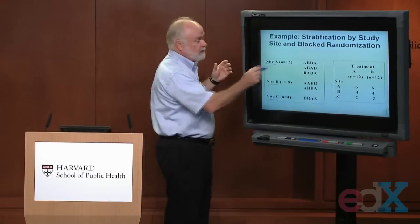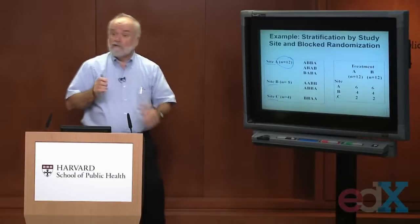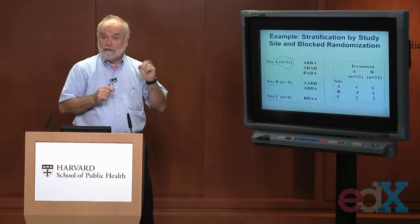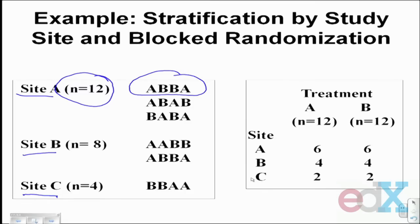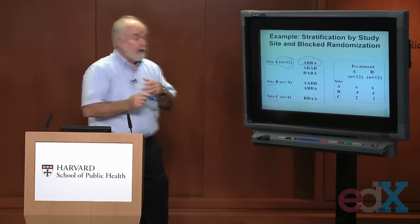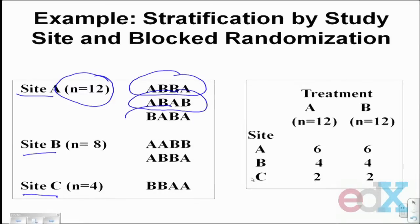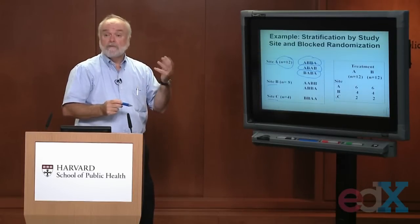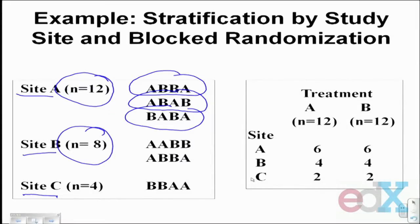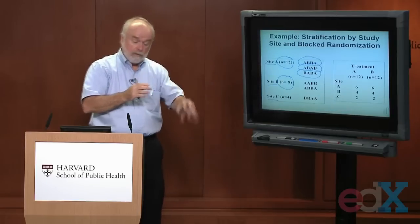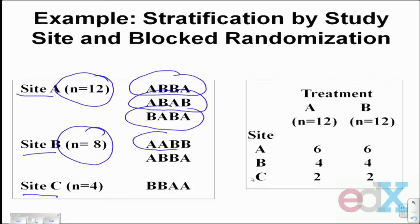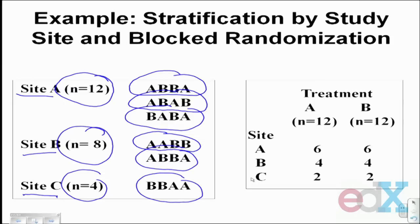So I do block randomization stratifying by hospital. Hospital A has 12 people to enroll using a block size of four. The first sequence picked is ABBA — that's how the first four from hospital A are assigned. The next four are assigned ABAB, the last four BABA. For hospital B with eight patients, the first four are assigned AABB and the next four ABAB. For hospital C with only four patients, they're assigned BBAA. That's what happens separately within each hospital.